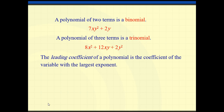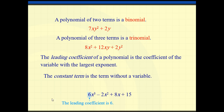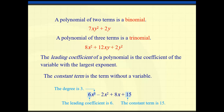The leading coefficient of a polynomial is the coefficient of the variable with the largest exponent. So if I give you this example: 6x³ minus 2xy plus 8x plus 3. I need to have one variable. What is the highest degree? It's x³. So my leading coefficient is 6 — it's the coefficient of the term with the highest degree. The degree of this polynomial is 3, and the constant is 15.